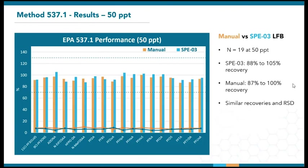Method 537.1 requires the rotation of QC spikes between low, mid, and high levels. Here are the results of their 50 PPT LFBs over 19 extractions. The recoveries fell comfortably between the tighter 70% to 130% limit. The RSDs are again similar and well below 20% for both approaches.